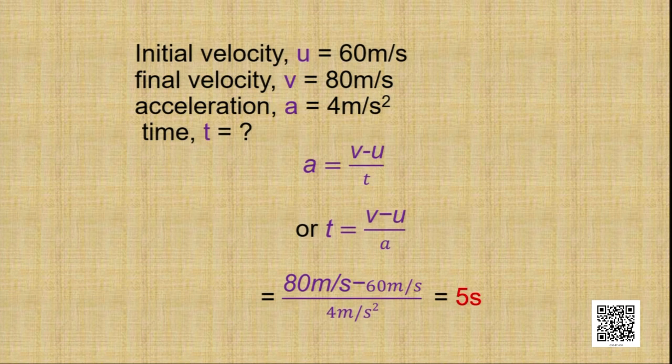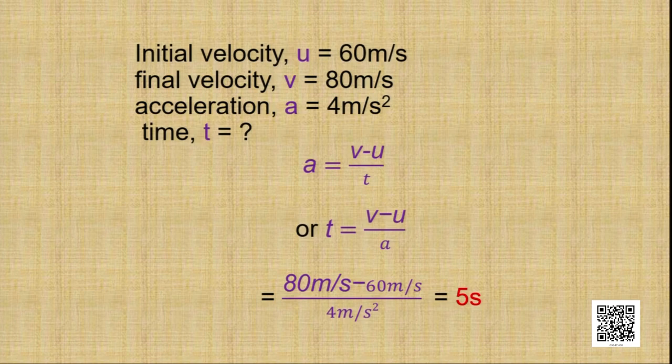Substituting: 80 minus 60 is 20, divided by 4 gives 5. So the time required to reach a velocity of 80 meter per second from 60 meter per second at an acceleration of 4 meter per second square is 5 seconds.